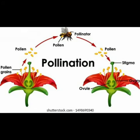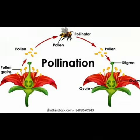What is pollination? Pollination is a process by which the pollen grains reach the stigma. The flower that receives pollen grains is called a pollinated flower, while the one that did not receive pollen grains is called an unpollinated flower.